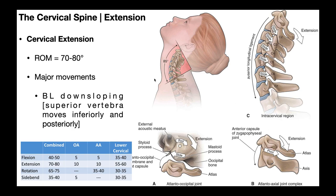For extension range of motion, combined it's about 70 to 80 degrees — notice we have a greater extension range of motion than flexion. In the same manner as flexion, the lower cervical spine — segments C2-3 down to C7-T1 — contributes a much greater percentage: 55 to 60 degrees of the 70 to 80. The atlanto-occipital and atlanto-axial joints each contribute about 10 degrees to extension. Every level — atlanto-occipital, atlanto-axial, and the lower cervical spine — all contribute to both flexion and extension.